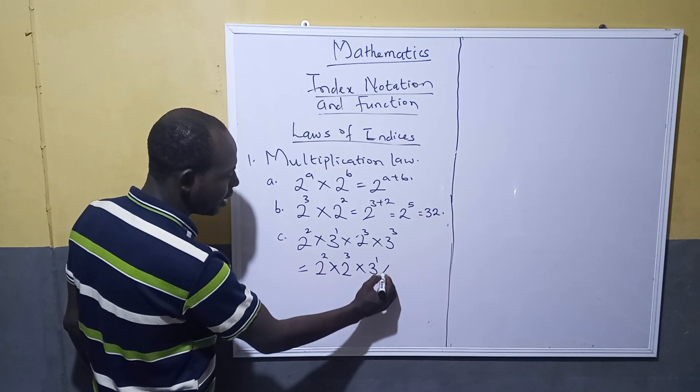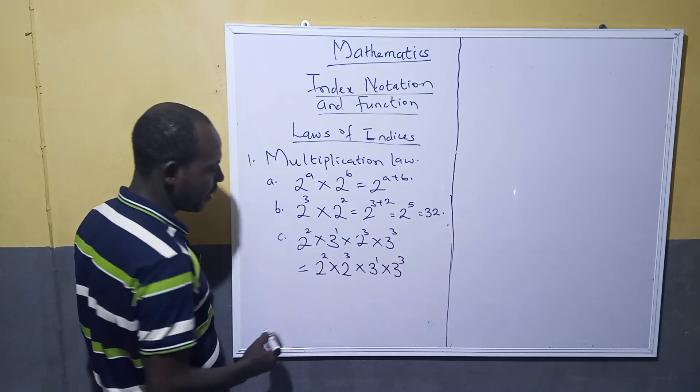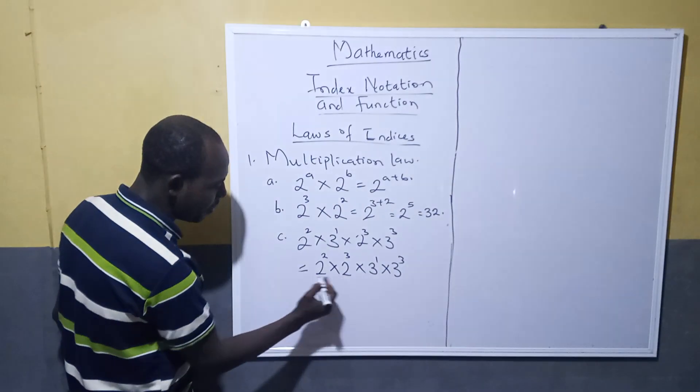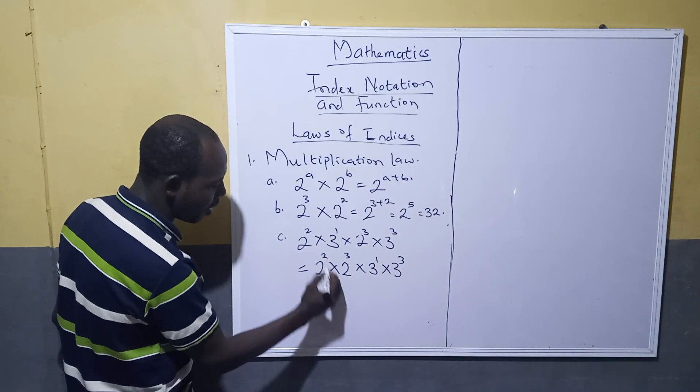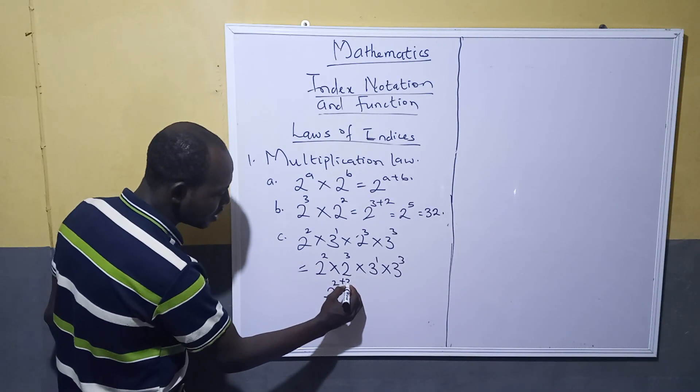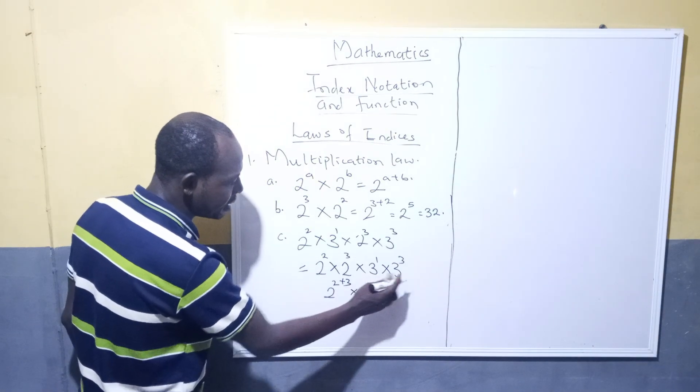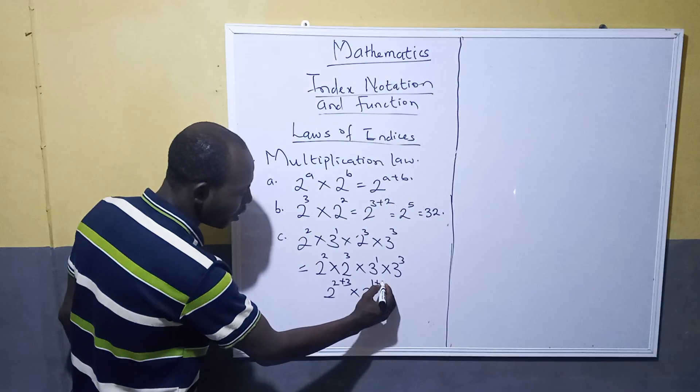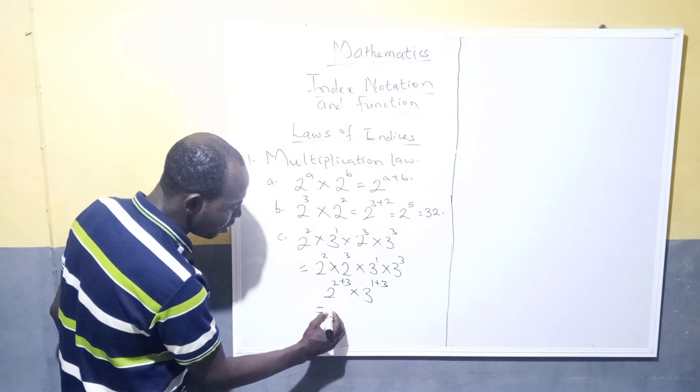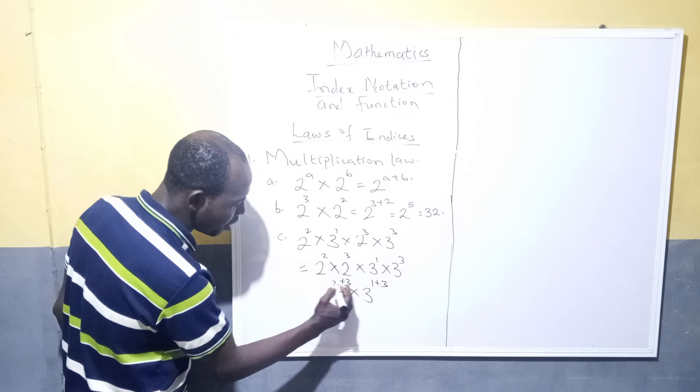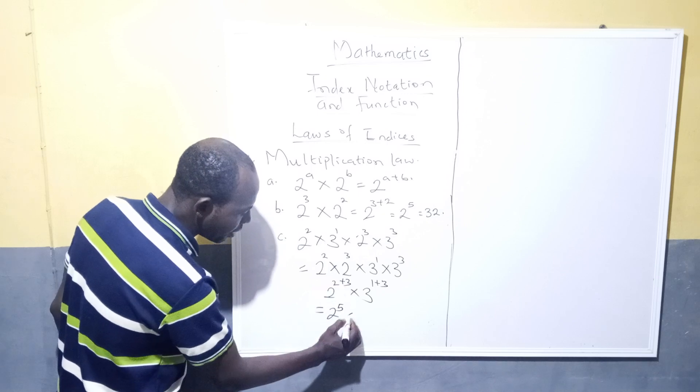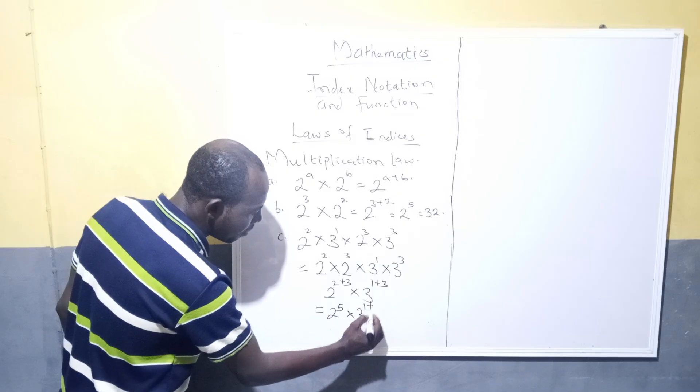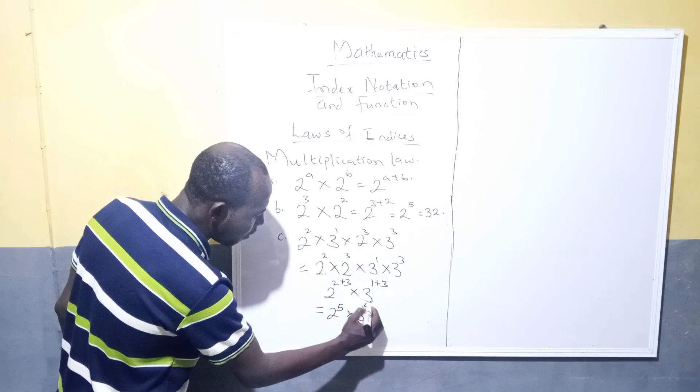You have 2 raised to power of 2 multiplied by 2 raised to power of 3, then multiply by 3 raised to power of 1 plus 3. Then apply the method that I said earlier. Taking one of the bases, you have 2 to the power of 5, multiply by 3 to the power of 1 plus 3, gives you 3 to the power of 4.